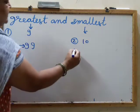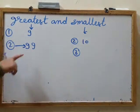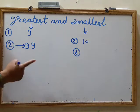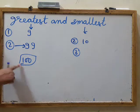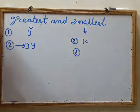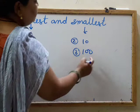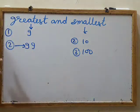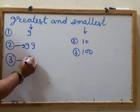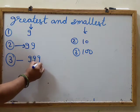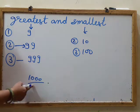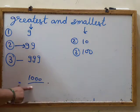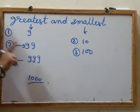The smallest three-digit number is just after 99. After 99 comes 100, and it is the first three-digit number, so obviously it is the smallest three-digit number. In the same way, the greatest three-digit number is 999, because next to it comes 1000, which has four digits.